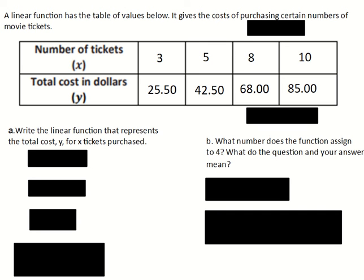A linear function has the table of values below. It gives the cost of purchasing certain numbers of movie tickets. The top row is the number of tickets, the x variable. You have values of 3, 5, 8, and 10.